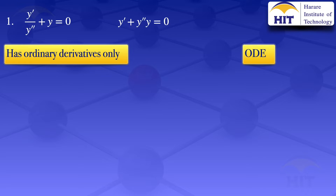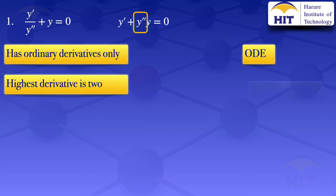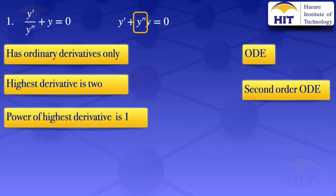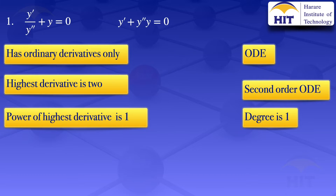Looking at that equation, the highest derivative is 2, and if the highest derivative is 2 the differential equation is a second order ODE. Still looking at the highlighted part, y prime prime is just raised to the power one, therefore the degree of the ODE is one.